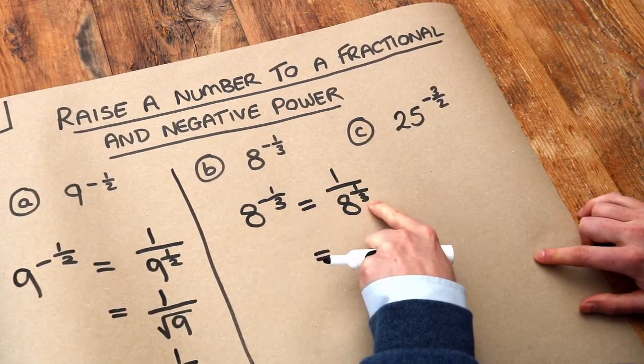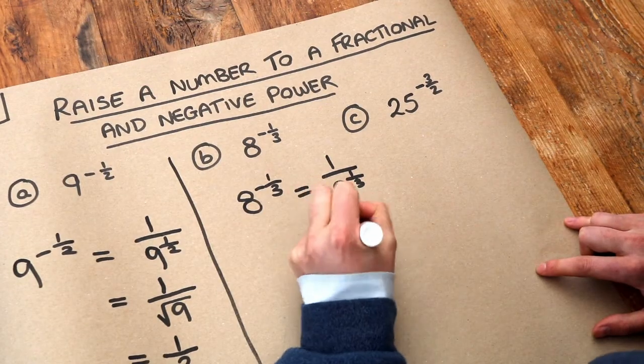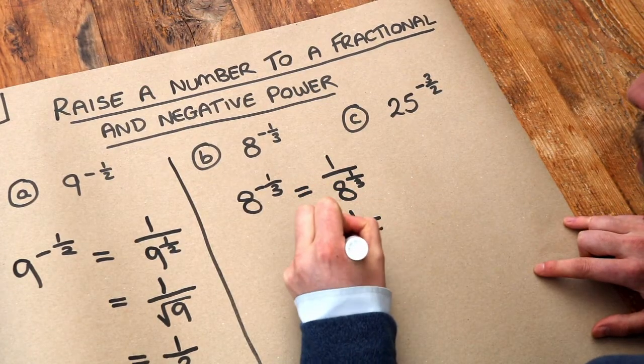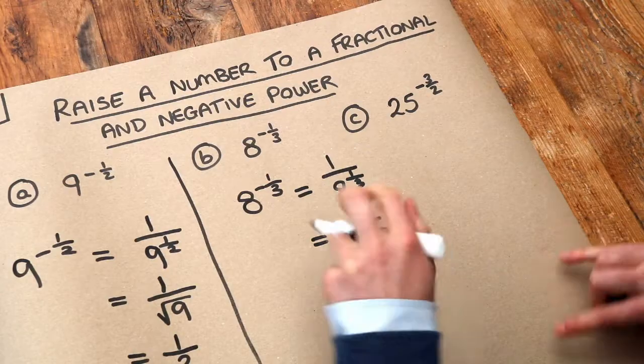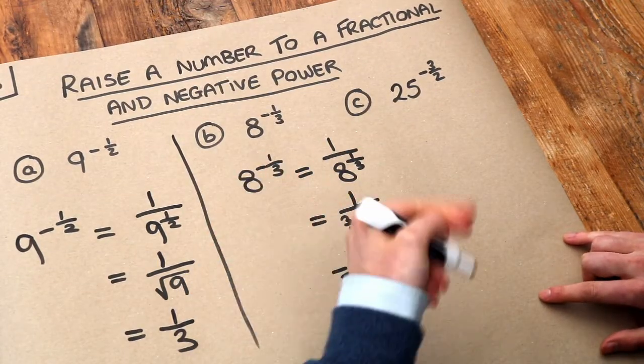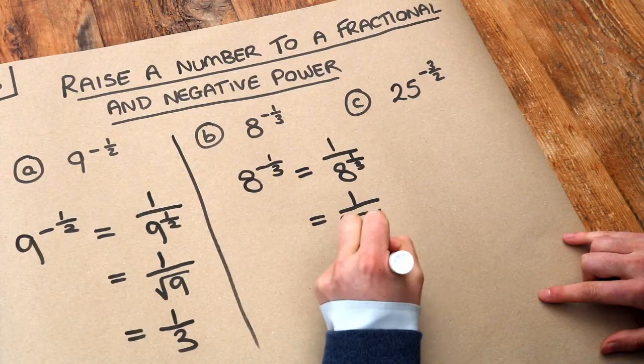And then a power of a third means the cube root. So we're going to do the cube root of 8. We've still got the 1 over there. And the cube root of 8 is just 2 because 2 cubed is equal to 8. So we've got 1 over 2.